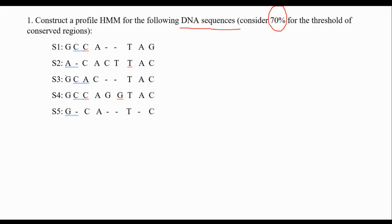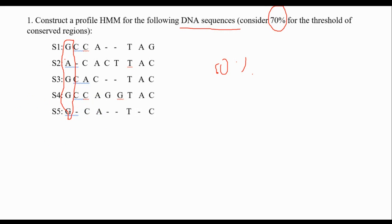If I have three same letters, like three C's here, that means 60% of the positions have the same letter — this is not a conserved region. So one by one: for the first column, I see that four of them have the same letter G, so this is a conserved region. We have a starting point, and from the start I reach the first conserved region, let's call it M1.